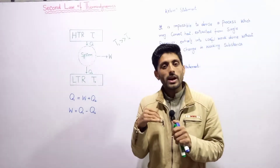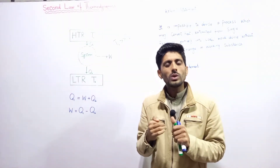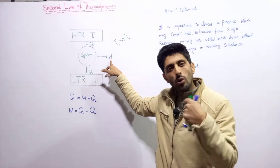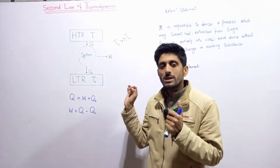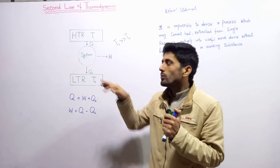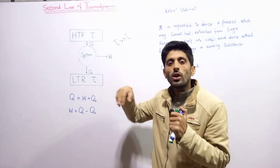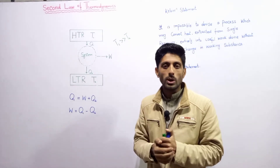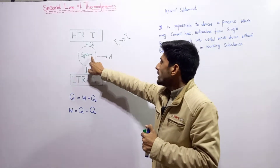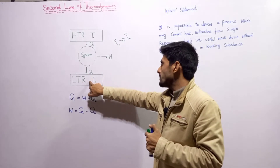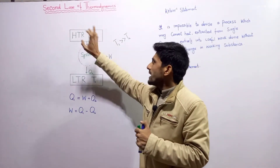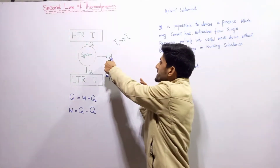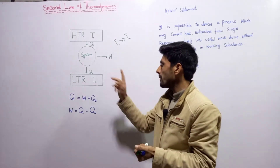Gases are our working substance in this chapter. For continuously obtaining work done from a heat engine — continuous output — the working substance must follow a cyclic process. The working substance delivers continuous output by following a cyclic order.